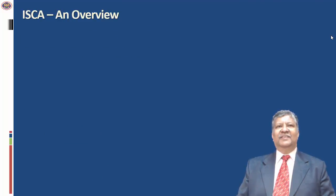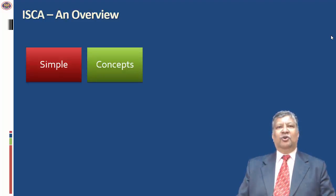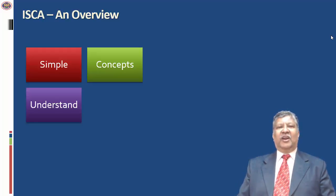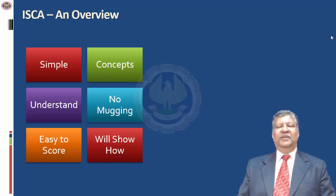Let me give you an overview of what ISCA is all about. ISCA stands for Information Systems Control and Audit. Information systems are all pervasive. If you understand information systems primarily from the perspective of controls, and as an auditor know how to review and evaluate these controls embedded in information systems, you find this is a fascinating subject. It's simple to understand, but you need conceptual clarity. Read for understanding, not just for remembering, because what is required to score marks in the exam is to demonstrate that you understand the subject.